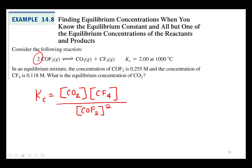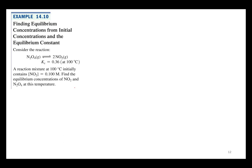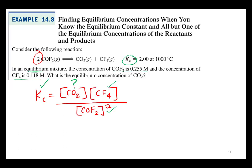Alright, now let's see what we got. So in the problem, we're given K sub C, so we got that. At equilibrium, COF2 is 0.255, so we got that. Concentration of CF4 is 0.118, so we got that. So what are we looking for? What is the concentration of CO2? That's what we're solving for. So we're just going to rearrange this equilibrium constant and solve for CO2.